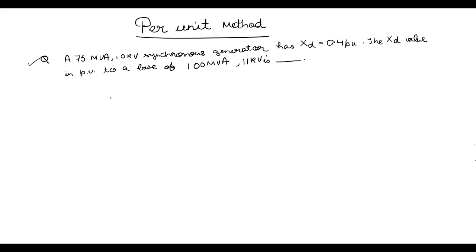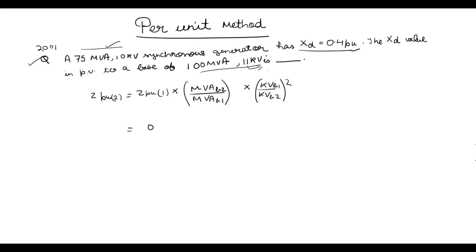Let's take an example — this is a GATE 2001 question. The impedance value is given in per unit, its base value is also given, and the new base value is also given. We just use the direct formula: Z_pu2 = 0.4 × (100/75) × (10/11)². This value works out to approximately 0.44 per unit.